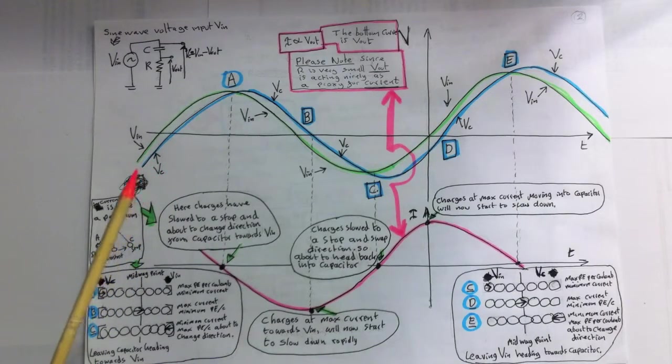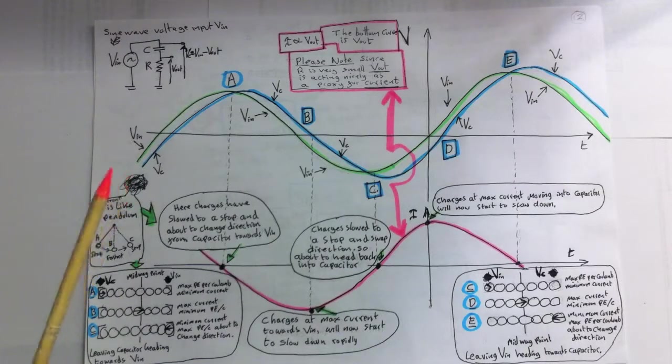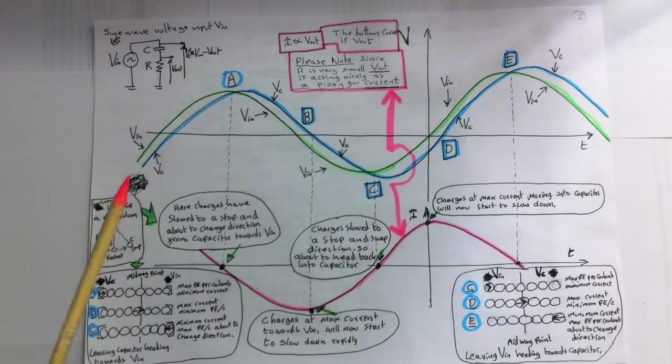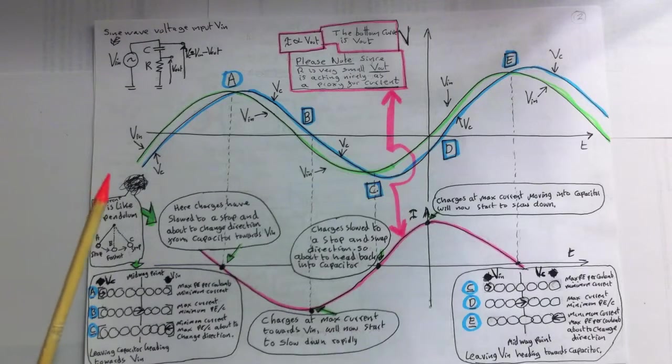Also, because of impedance of the circuit, the charge flow is slowed down, causing Vc, the voltage across the capacitor, to always be delayed in time with respect to the source voltage, Vin. So that's exactly what's happening in the Vc, the voltage sine wave signal.